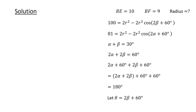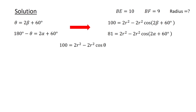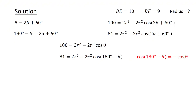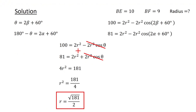If we let theta equal 2 beta plus 60 degrees, then 180 degrees minus theta equals 2 alpha plus 60 degrees. Plugging this into our equations, we obtain 100 equals 2R squared minus 2R squared cosine theta, and 81 equals 2R squared minus 2R squared cosine of (180 degrees minus theta). Since cosine of (180 degrees minus theta) equals minus cosine theta, our second equation becomes 81 equals 2R squared plus 2R squared cosine theta. Adding the two equations, the cosine theta terms cancel out and we obtain 4R squared equals 181. After dividing both sides by 4 and taking the square root, we obtain R equals the square root of 181 over 2, which is the solution to our problem.